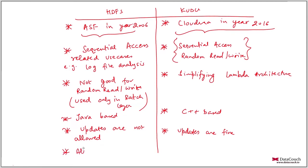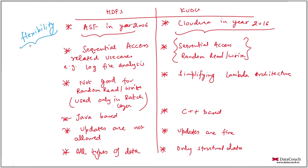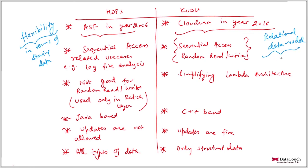In HDFS you can store all types of data, but in Kudu you can store only structured data. HDFS is preferred when you need flexibility — for instance, when you want to store free text files, images, or videos, or when you don't yet know what clients will do with the data. But Kudu uses a relational database data model, so you have to be very structured when storing data — it is much more strict than HDFS.